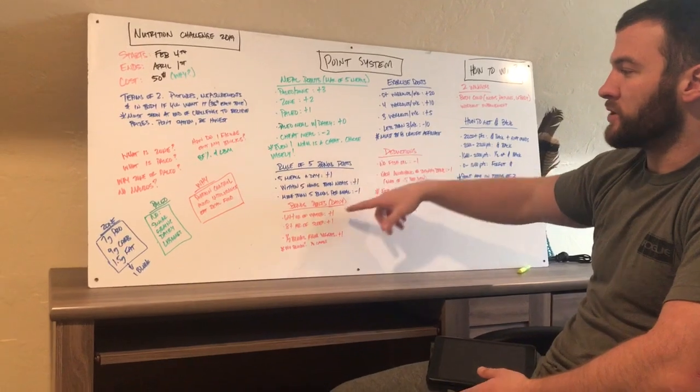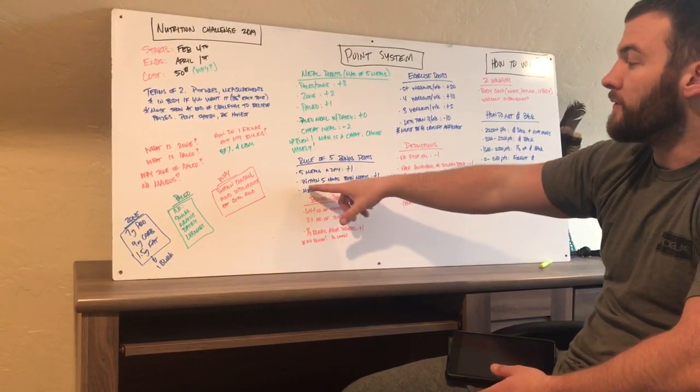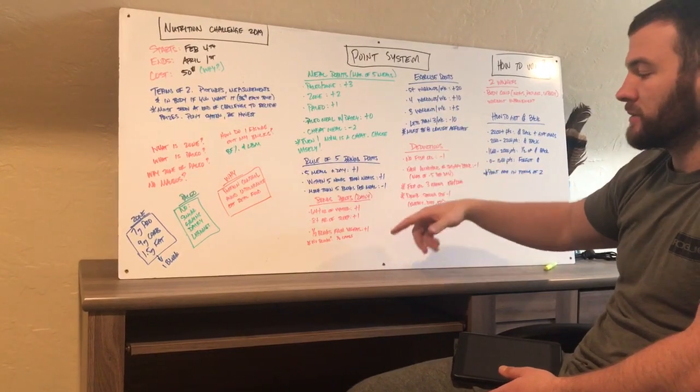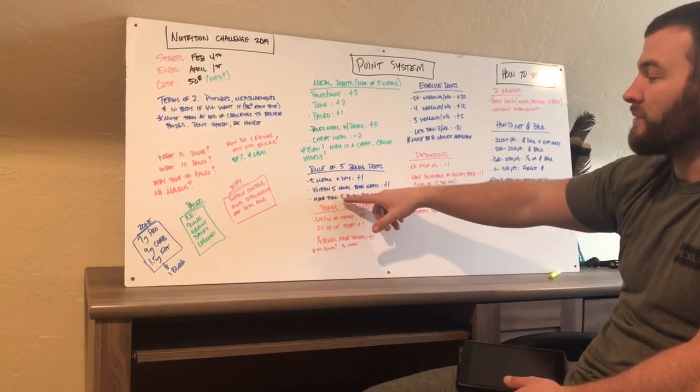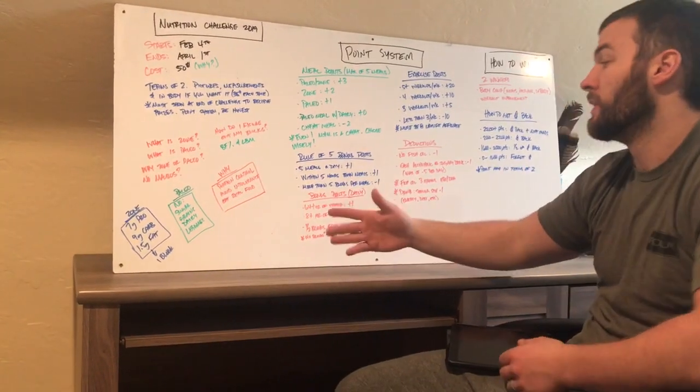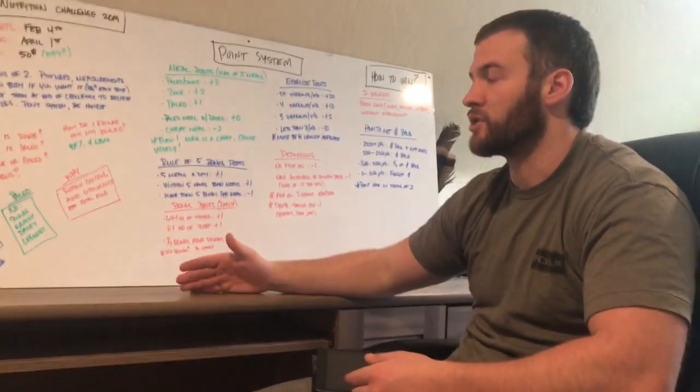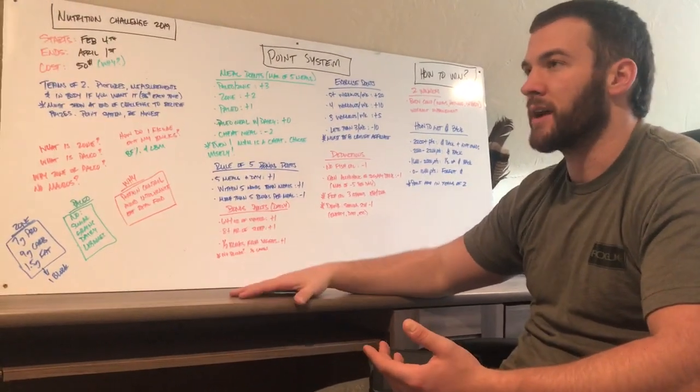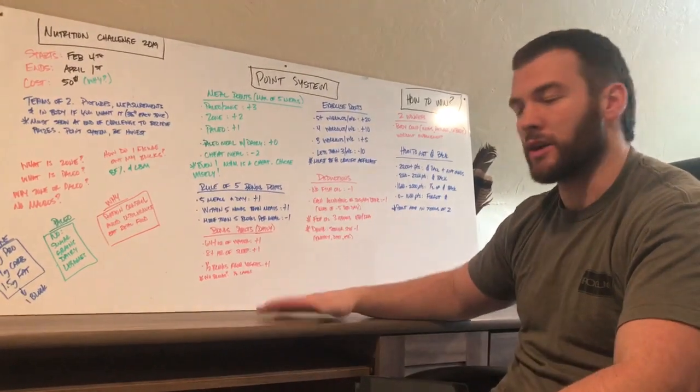The rule of five bonus points. So if you have five meals a day, you get a bonus point of plus one every day. If you eat within five hours of the meals, every five hours I'm eating, you get another plus one. If though you have more than five blocks per meal, you get a minus one. So the whole point of that is that people, the reason we don't want five blocks is because people tend to maybe not eat. And then at night they're trying to stuff everything and they're like, oh, I need to make up five blocks. Well, maybe I'll just eat some ice cream because that's pretty simple to get some blocks in. So we want to try to avoid that.